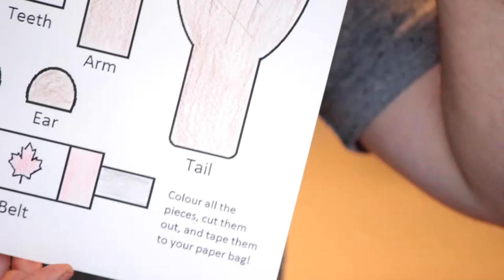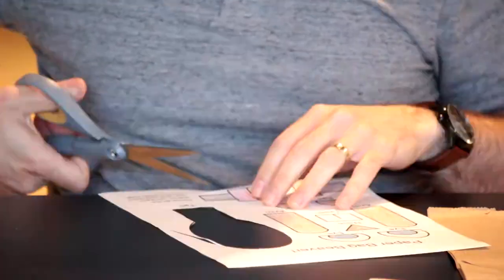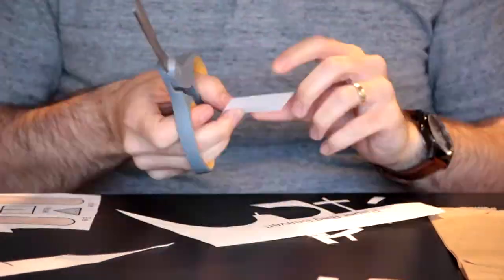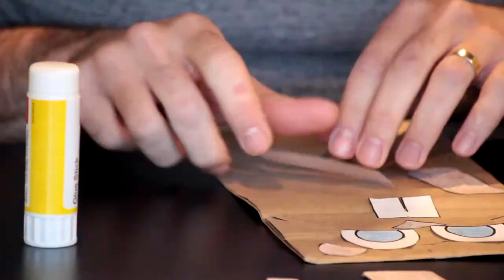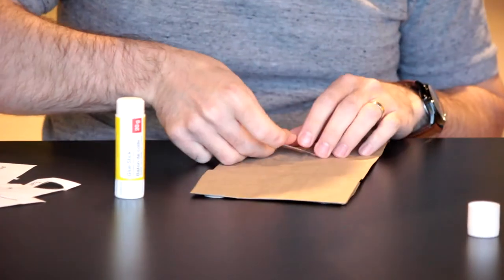When your beaver is all colored in, we're going to start cutting out each piece so we can glue them onto our paper bag. Once we have all the pieces cut out, take a glue stick and glue them to the paper bag. Last but not least, the tail.